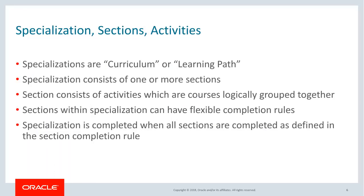A specialization is like a curriculum or a learning path. It contains courses logically grouped into sections, and may consist of one or more sections. Sections and their activities have flexible completion rules. For example, within a section all the courses may be mandatory, optional, or a combination. A specialization is completed when all sections are completed as defined in the section completion rule.